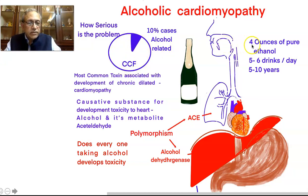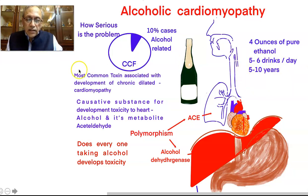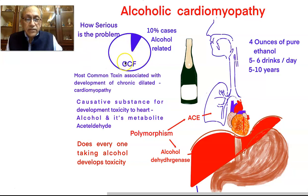How much alcohol is required to produce cardiomyopathy? 4 ounces of pure ethanol, or 5 to 6 drinks per day for 5 to 10 years, is responsible for the production of alcoholic cardiomyopathy. And the most common toxin associated with the development of chronic cardiomyopathy is alcohol. It is also one of the most common precipitating factors for the development of congestive cardiac failure.